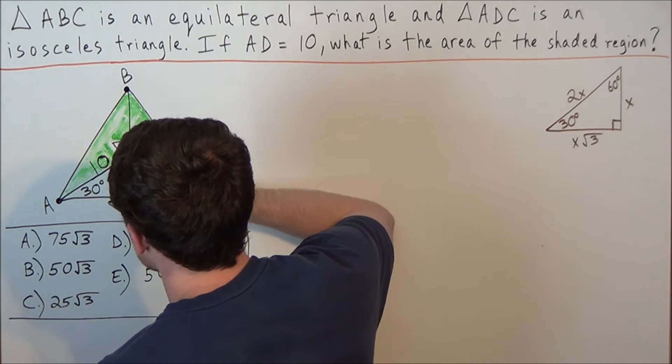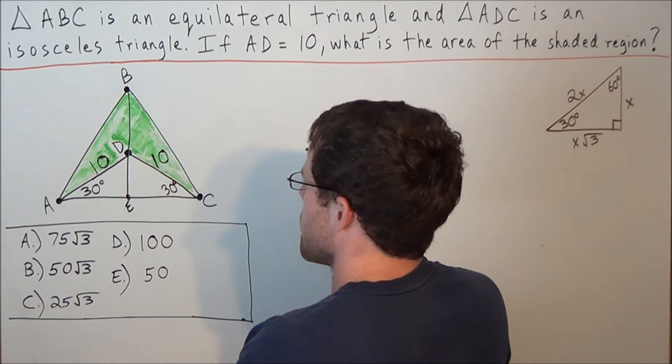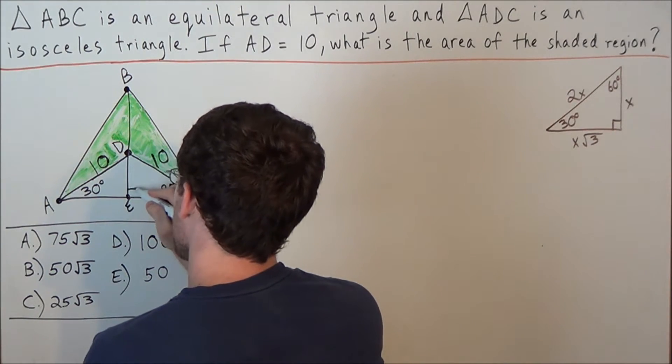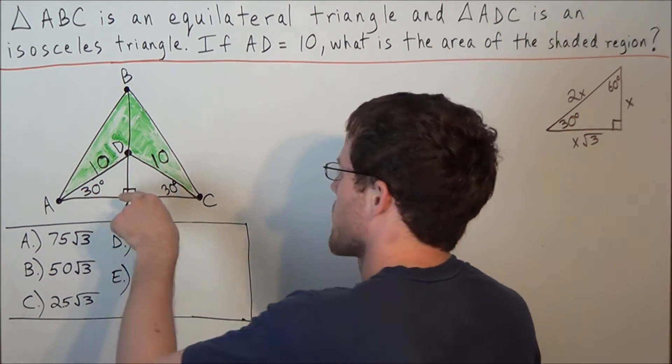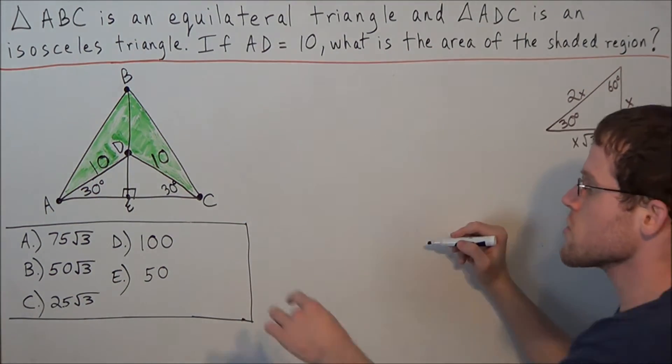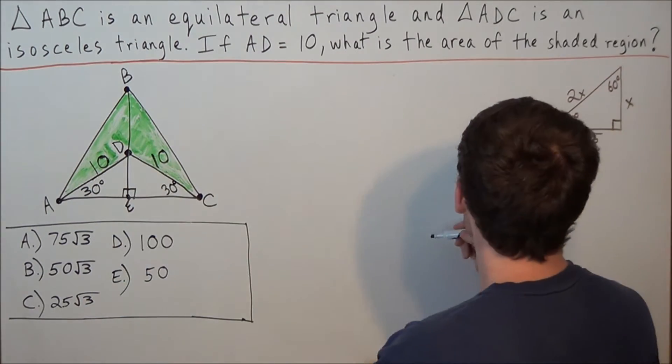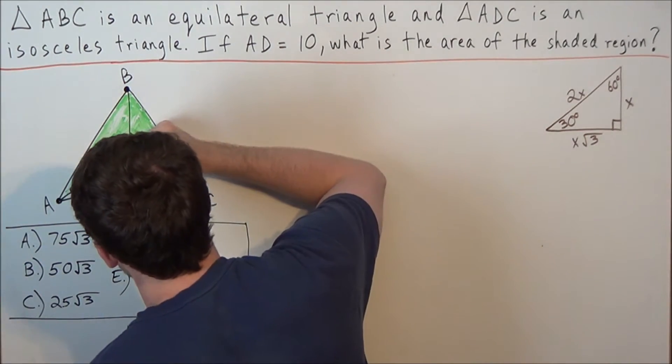We could label this intersection point down here E. And since it's an altitude, we're going to draw in the two symbols for 90 degree angles. But now, since we have 30 degrees, 90 degrees, we could go ahead and label the other angles in here 60 degrees.